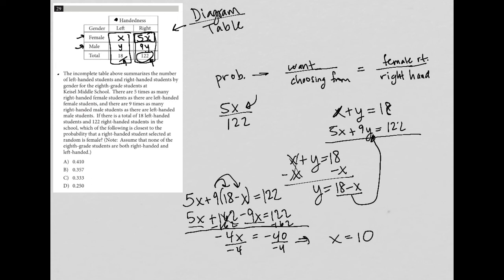Okay, now if X is equal to 10, I can take that 10 and plug it back in here. So now I know that there are 5 times 10 female right-handed students. So I'd have 50 divided by 122.